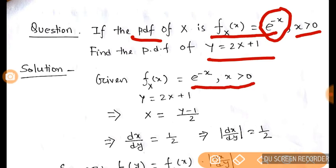Now we take Y = 2X + 1, this is given, and we find X from the above equation. We get X = (Y - 1)/2.